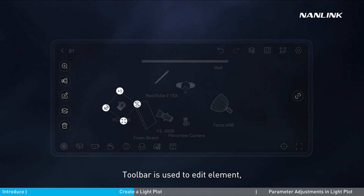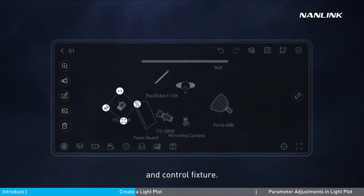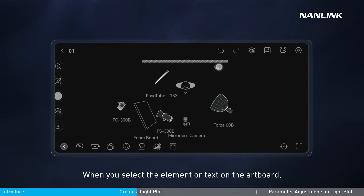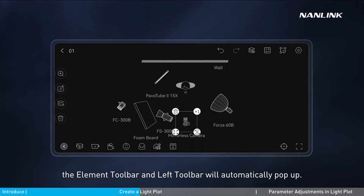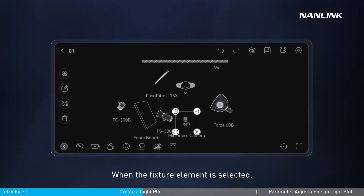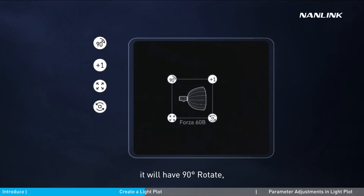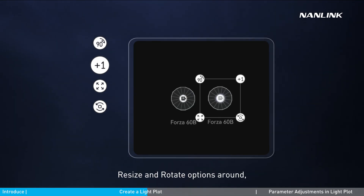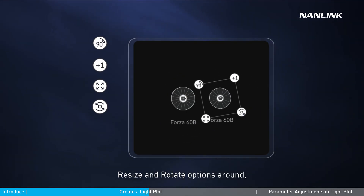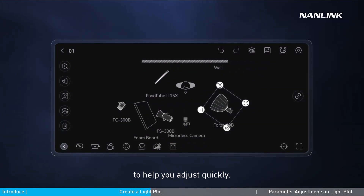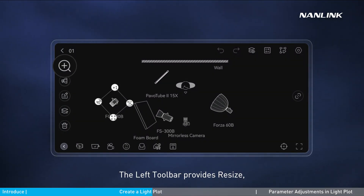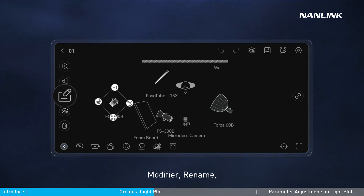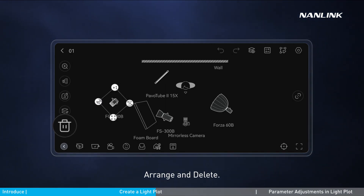The toolbar is used to edit elements, text, and control fixtures. When you select an element or text on the artboard, the element toolbar and left toolbar will automatically pop up. When a fixture element is selected, it will show 90-degree rotate, duplicate, resize, and rotate options to help you adjust quickly. The left toolbar provides resize, modifier, rename, arrange, and delete.